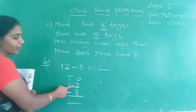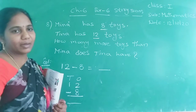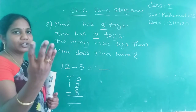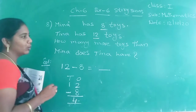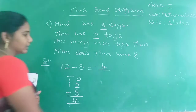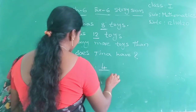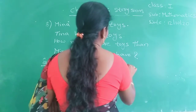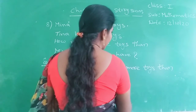Now, start doing subtraction. This number is 12, here you are having 8. So close all the fingers. In subtraction, close all the fingers and count: 8 after 9, 10, 11, 12. How many fingers you got? 4. So how many toys is Tina having more? Tina is having 4 toys more. So you have to write: Tina has 4 more toys than Mina.